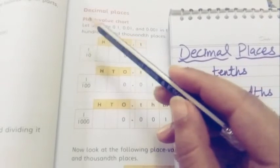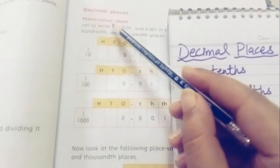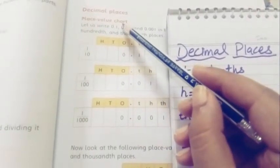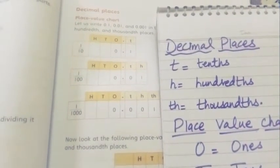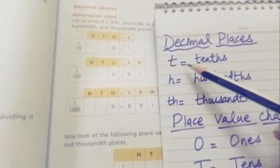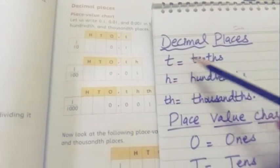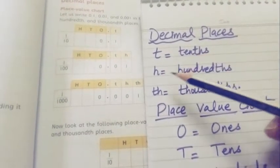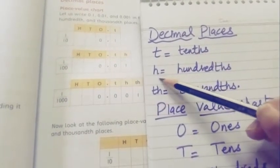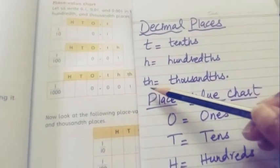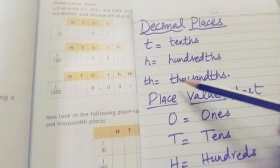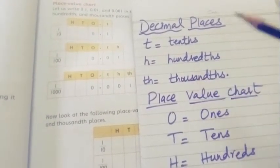Our next topic is decimal places, in which I will discuss the place value chart. In this chart, the small t represents tenths, the small h represents hundredths, and the small th represents thousandths.